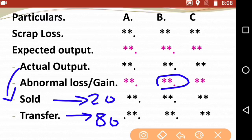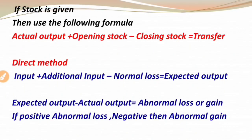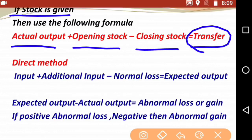If stock is given in the question, in the whole statement you make abnormal loss or gain, then take actual output, then deduct closing stock, and the remainder is the transfer value. However, I prefer that you do not attempt the stock level, because it requires considerable length and time.